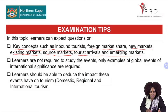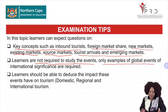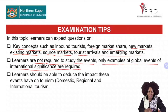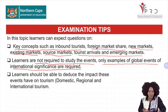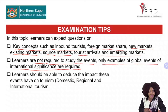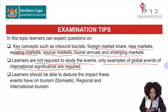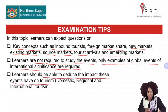Grade 12 learners, when these examples are asked, you need to know the recent occurrences — what has happened recently concerning global events, unforeseen occurrences, and political situations. You will be asked about recent events. Also, you should be able to deduce the impact of these events on domestic tourism, regional tourism, as well as international tourism. When you started at the beginning of the year, you covered global events with positive and negative impacts, advantages, disadvantages, and benefits.